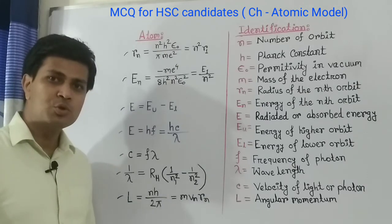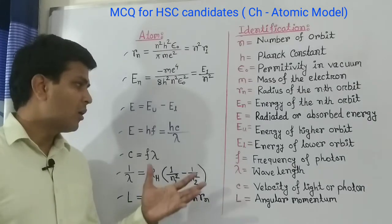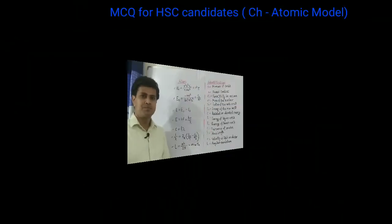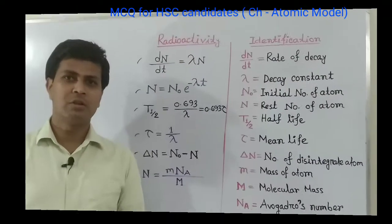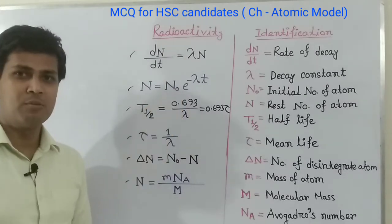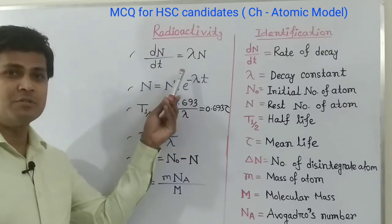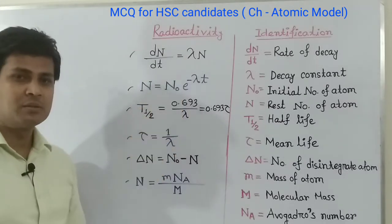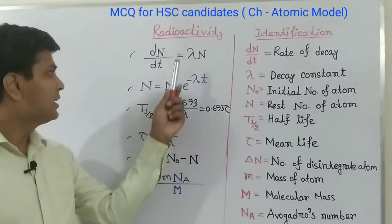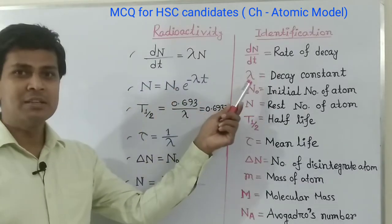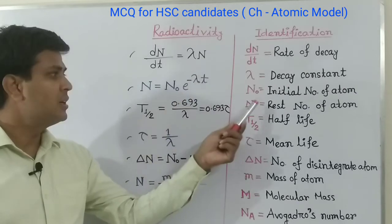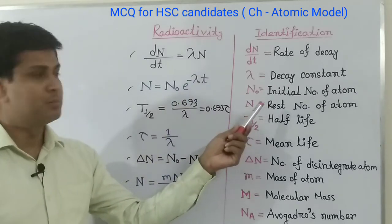The last atomic formula is to calculate the angular momentum: L equals to nh divided by 2 pi. These are all the formulas related to the atom. Now for radioactivity, the first formula is dN by dt equals to lambda N, where dN by dt is the rate of decay, lambda is the decay constant, and N is the initial number of atoms.